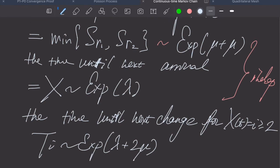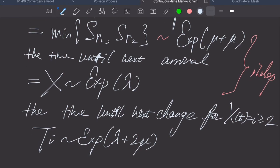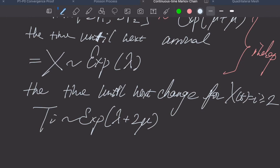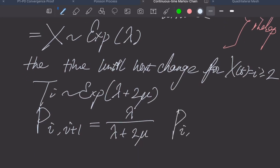We can simply follow this. We can derive the following: from i to i+1, there is a possibility of lambda divided by lambda plus 2 mu. And from i to i-1, this equals 2 mu divided by lambda plus 2 mu. This is for i greater than or equal to 2. For i less than or equal to 1, the case is the same as M/M/1.